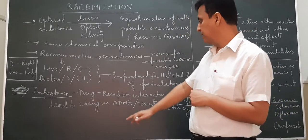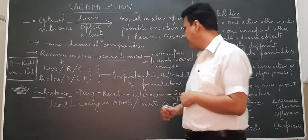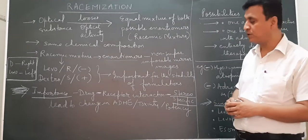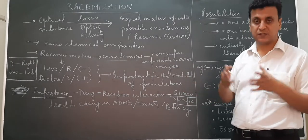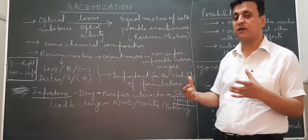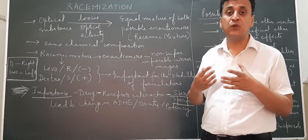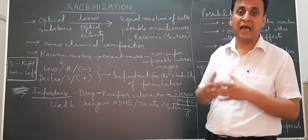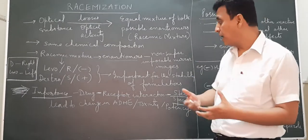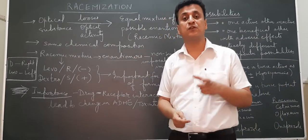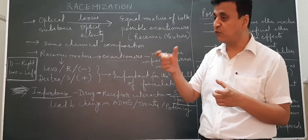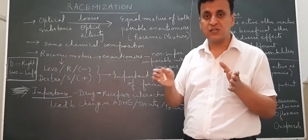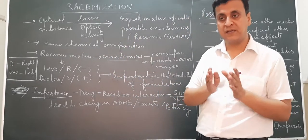Drug-receptor interaction is very highly stereo-specific. You might have studied in pharmacology about drug receptors and their interaction. This means that drug-receptor interaction is very stereo-specific - it is highly specific to the structure of the receptor as well as the structure of the drug. In the racemic mixture that forms, it's not necessary that if the dextro form shows activity, the levo form will also show the same activity. The levo form may show more activity because everything is based on the drug structure and how it binds to the receptor.